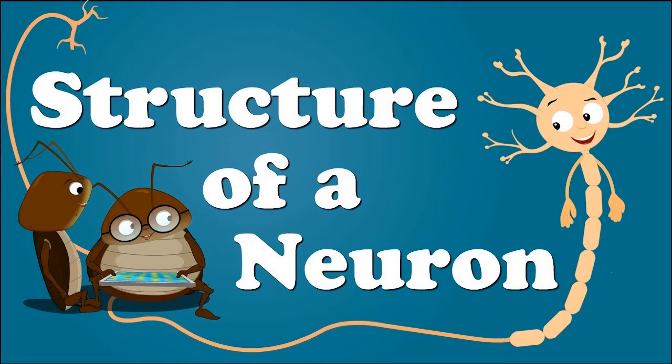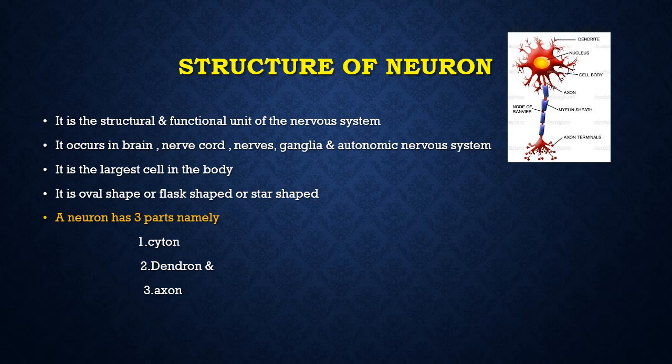Next we are going to see about the structure of Neuron. Neuron is the largest cell in the body and it acts as a structural and functional unit of Nervous System. This Neuron will be present in Brain, Spinal Cord, Nerve Ganglia, and Autonomic Nervous System. When we speak about its shape, it will be either oval shape, flask shape, or star shape.